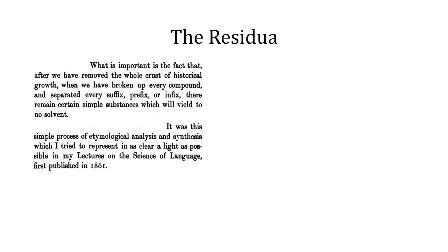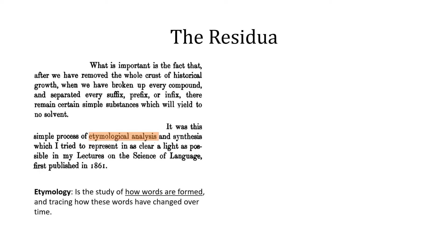What is important is that after we have removed the whole crust of historical growth, broken up every compound, and separated every suffix, prefix, or infix, there remain certain simple substances which will yield to no solvent. It was this simple process of etymological analysis and synthesis which Mueller tried to represent in his lectures on the science of language, first published in 1861. Mueller here invokes the study of etymology — the study of how words are formed and tracing how these words have changed over time.